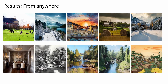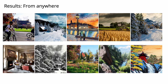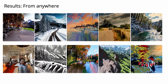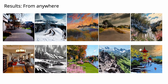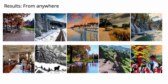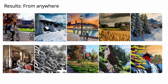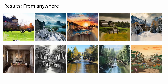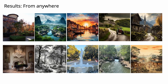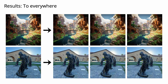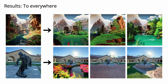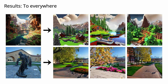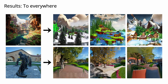Here we show some examples of going from anywhere. These include different types of scenes such as nature, a university campus, a village, and a countryside. These also include different visual styles such as real photos, oil paintings, and watercolors. From the same input image, we can synthesize different sequences of 3D scenes.